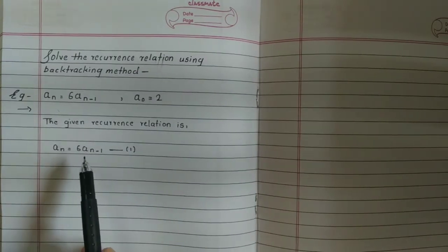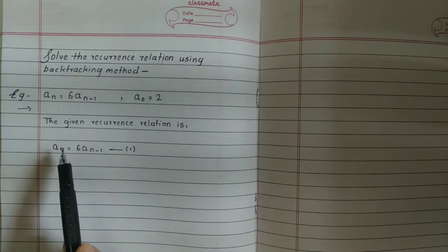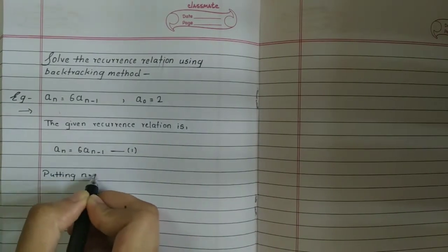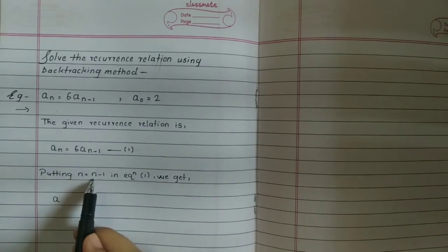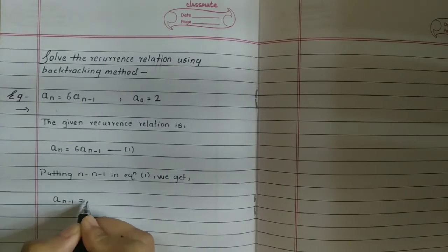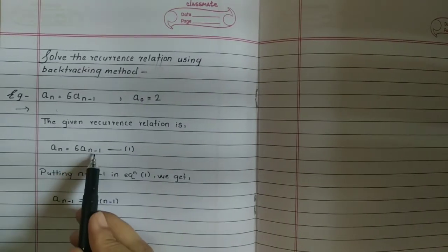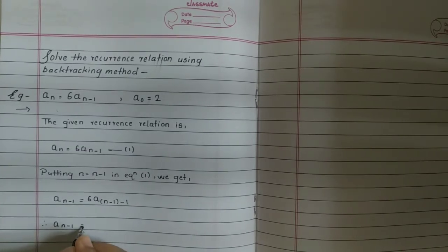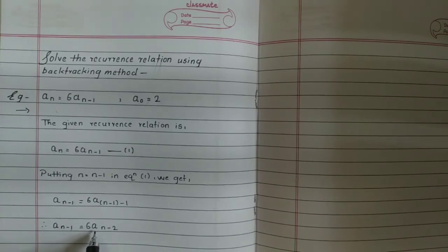Now, we have to find the value of aₙ₋₁. To find aₙ₋₁, we put n equals n-1 in equation number 1. By substituting n equals n-1, we get aₙ₋₁ equals 6aₙ₋₂. Here, we have obtained the value of aₙ₋₁, which is 6aₙ₋₂.